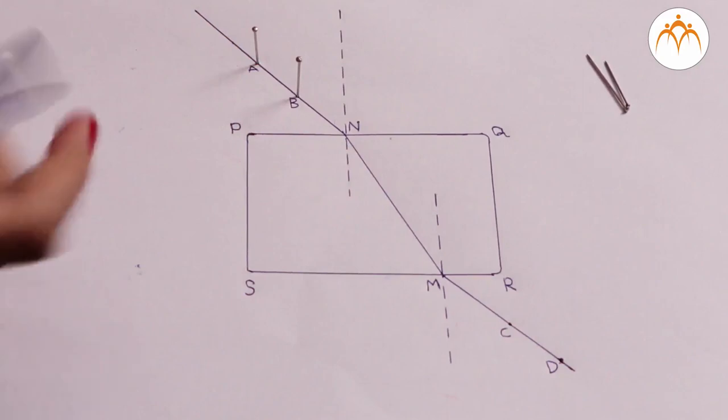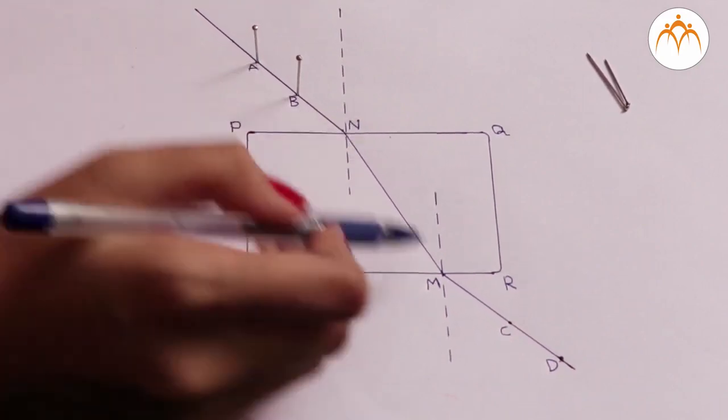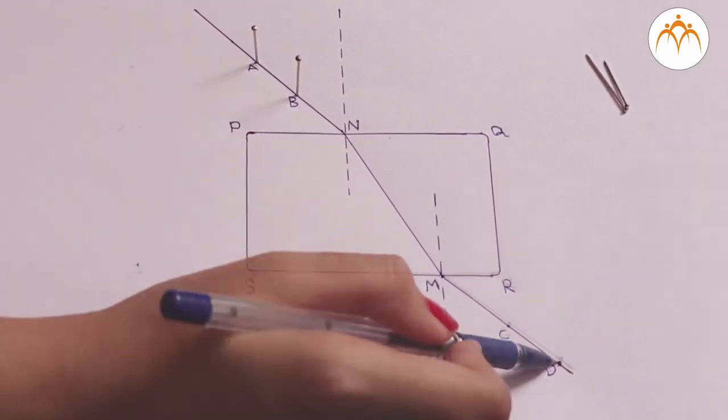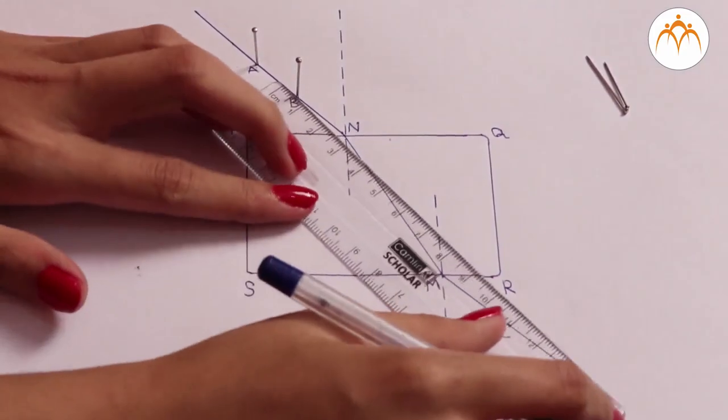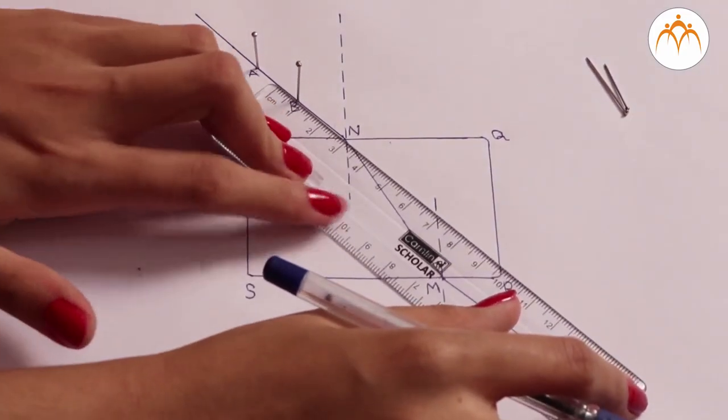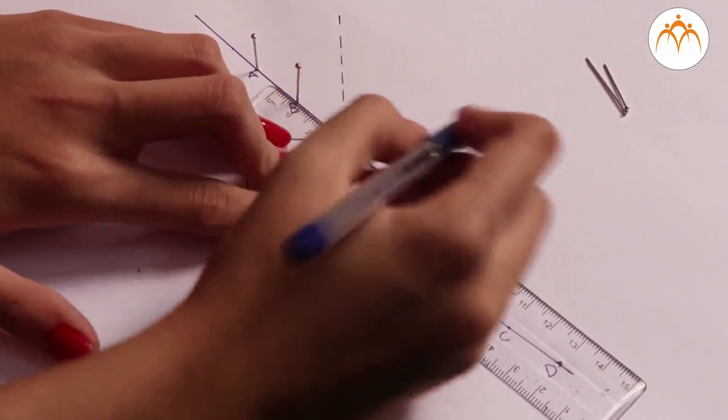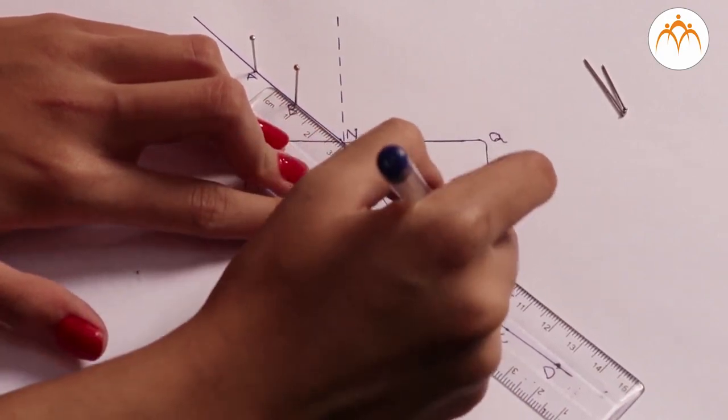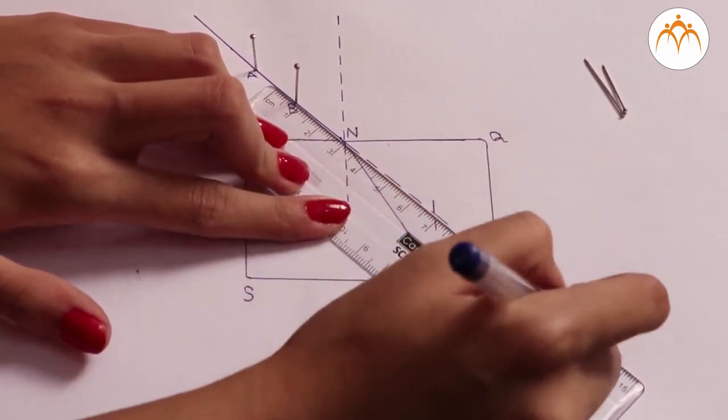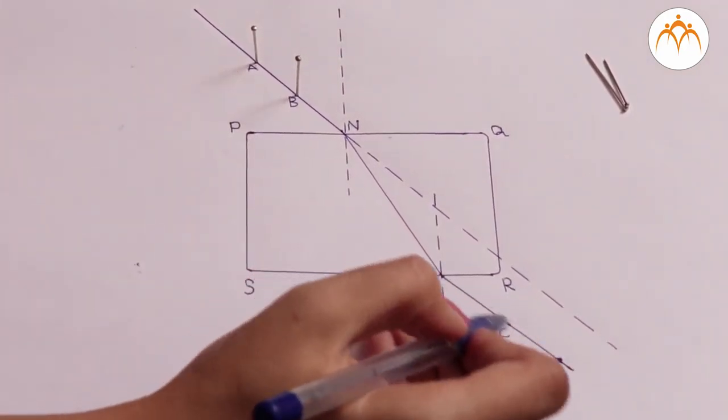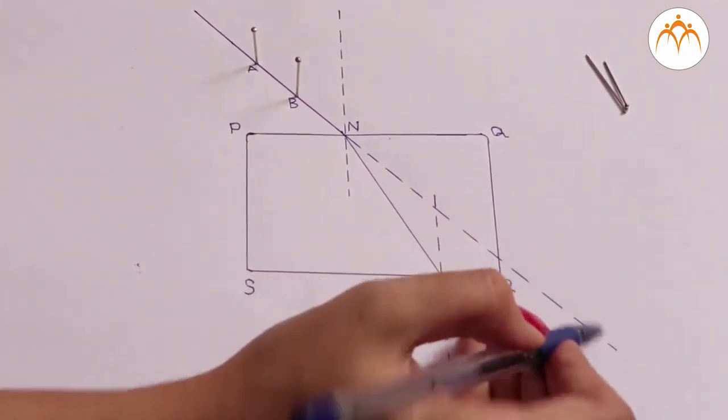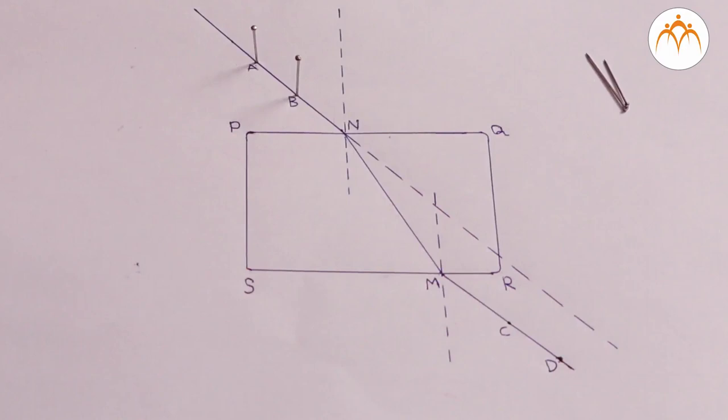Now let us observe what is happening here. The incident ray is AN and the emergent ray is MD. The emergent ray is not quite along the incident ray, right? It seems to be shifted a bit. In fact, it is exactly parallel to the incident ray.